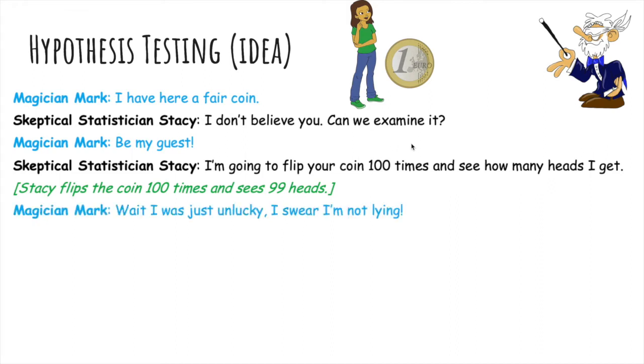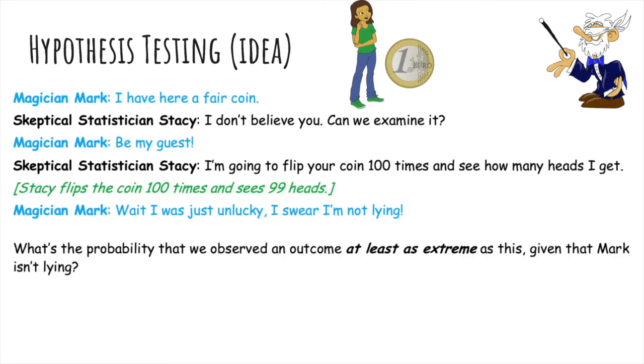So magician Mark says, wait, I was just unlucky. I swear I'm not lying. So let's give Mark the benefit of the doubt. We'll compute the probability that we observed an outcome at least as extreme as this, given that Mark isn't lying.